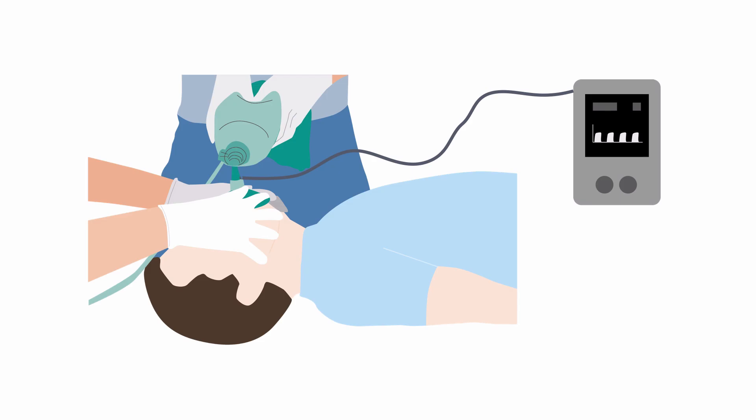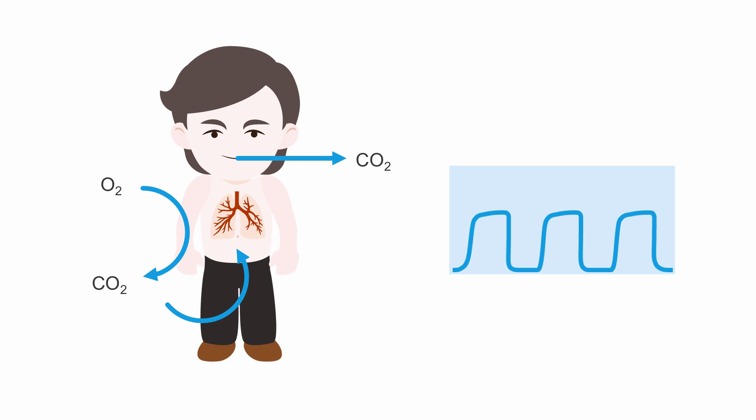This can be done quantitatively with an end-tidal capnometer or capnograph. These are devices which measure the presence of CO2 passing by a sensor attached near the patient's airway or within the breathing circuit and report a value, usually in millimeters of mercury. This can be useful in several ways.